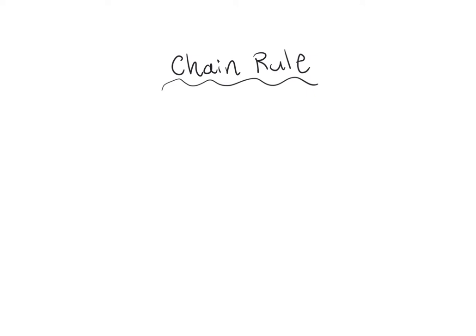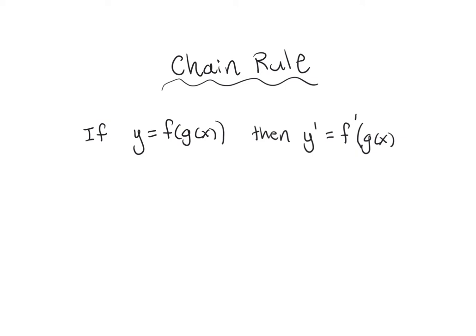Today's lesson is about the chain rule, another derivative rule. This is basically the derivative of a composition of functions. If y equals f of g of x, then the derivative equals the derivative of the outer function of g of x, times the derivative of the inner function. This is sometimes referred to as the onion rule because there can be many layers — derivative of the outside first, still of the original function, then times the derivative of the inner function.